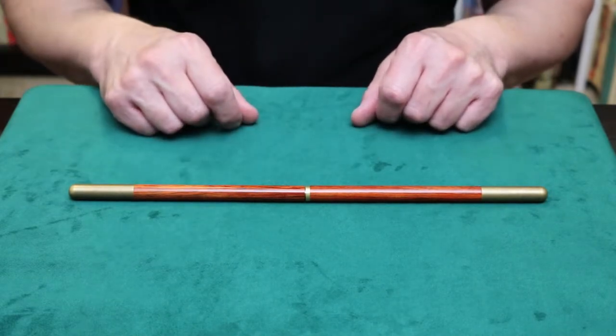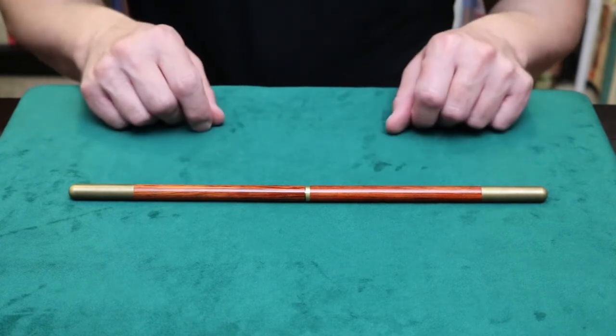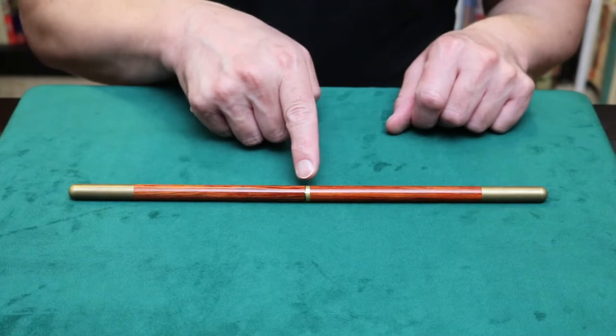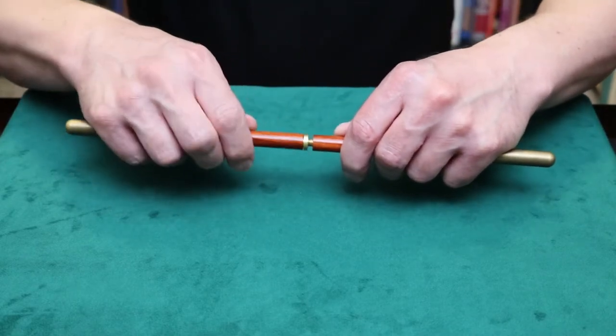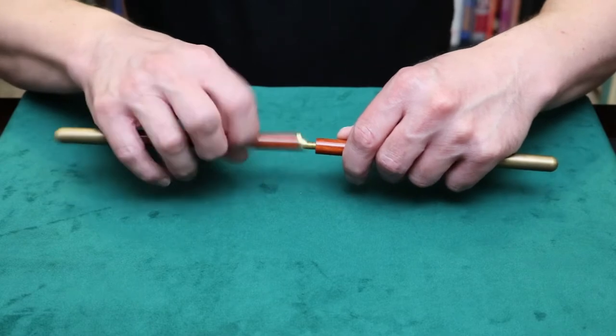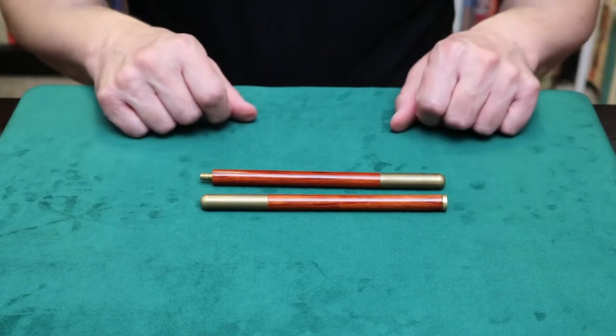I have another one to show you as well that's not finished wood, but this one is finished wood with brass tips. You'll notice a seam in the middle, and you just unscrew the wand into two pieces like this. This is perfect for storage in your magic bag or case.